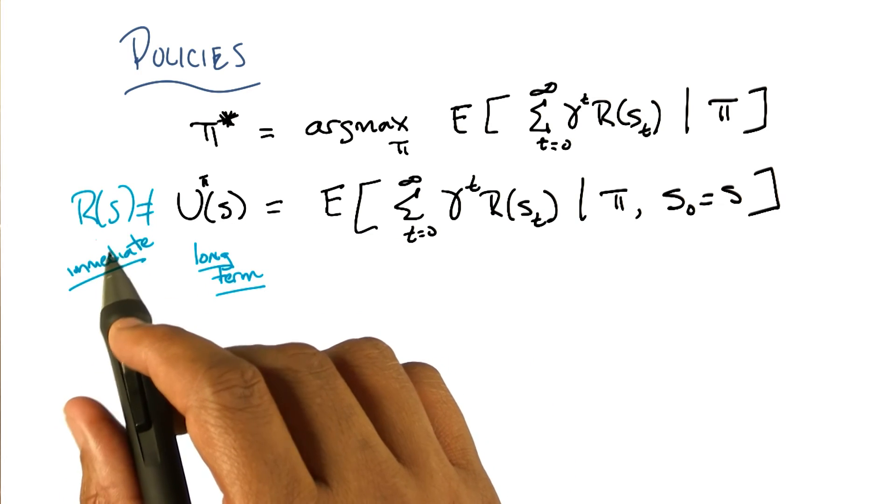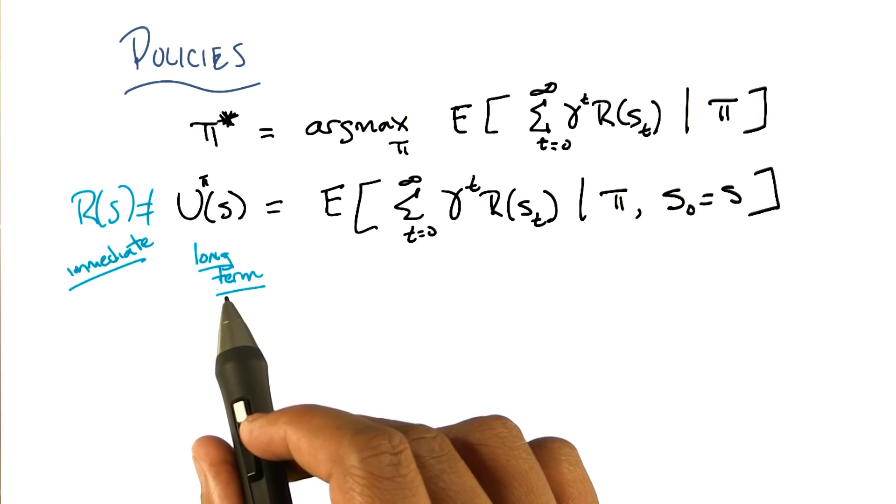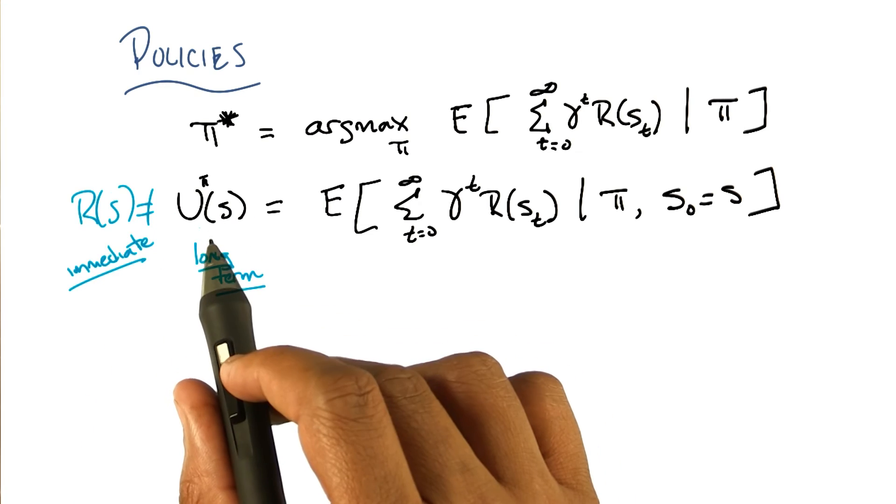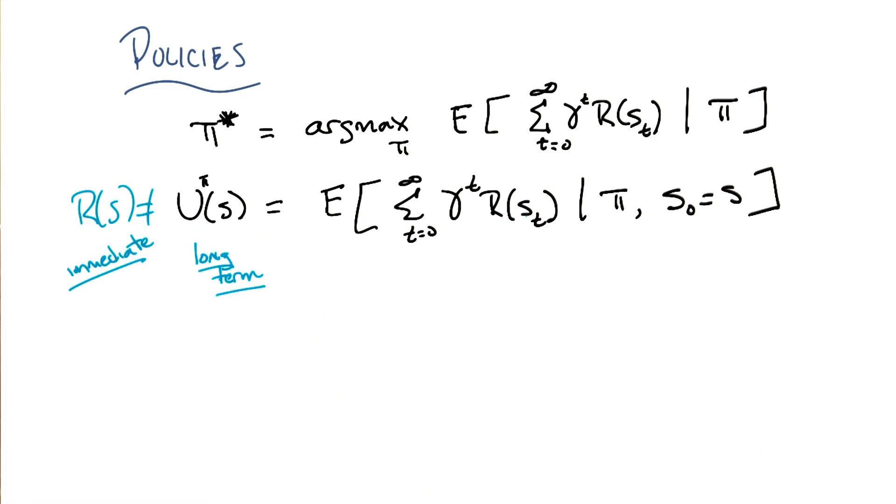So, when a reward for a state is the actual value that we get for being in that state. The utility for a state is both the reward that we get for that state, but also all the reward that we're going to get from that point on. I see. So, yeah, that seems like a really important difference.